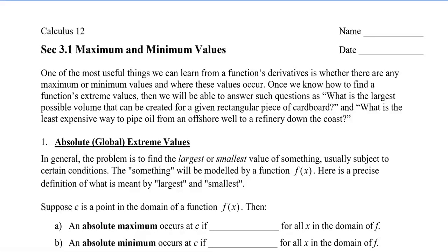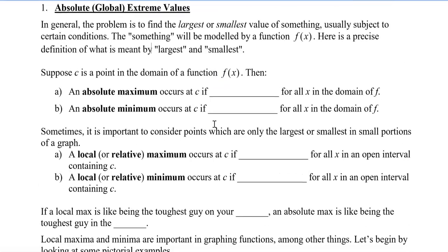In general, the problem is to find the largest or the smallest value of something, usually subject to certain conditions. The something will be modeled by a function f of x. So we're going to take a look at a precise definition of what it means to be the largest and the smallest. Suppose we have c, and it is a point in the domain of a function f of x. Then an absolute maximum occurs at c if f of c is bigger than or equal to f of x for all x in the domain of f. So what it's saying is that the y value at c is bigger or equal to all the other y values.